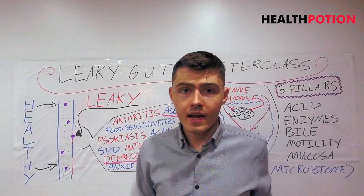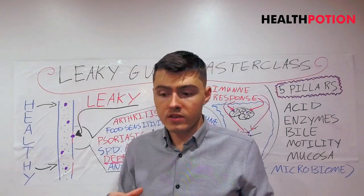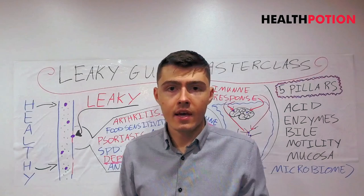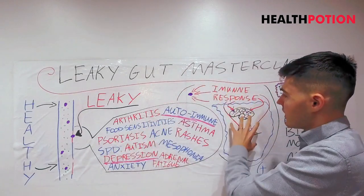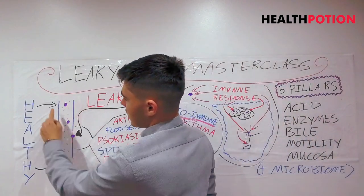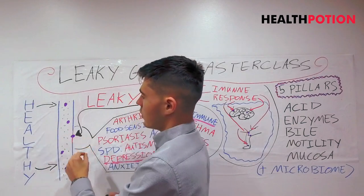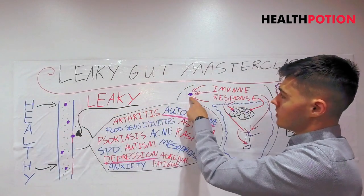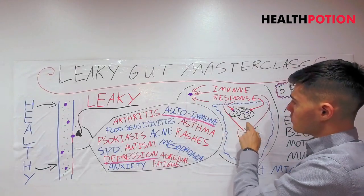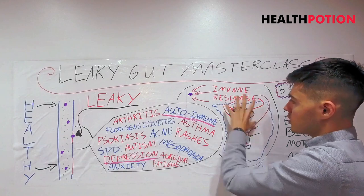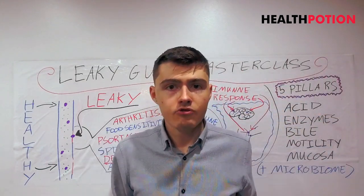Everybody has different genetic predispositions, and based on the composition of their microbiome and the foods they're eating, they're going to have different reactions. But if we seal this gut lining — like on the healthy side where there are no holes and no inflammation — none of these purple molecules can leak through. The immune system doesn't mount a response, which means the structures that look similar to them stop being attacked, and those symptoms just naturally go away by themselves.